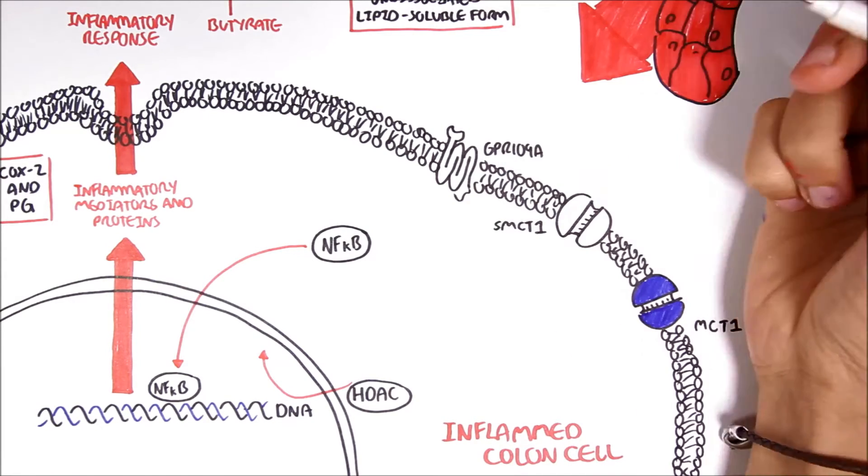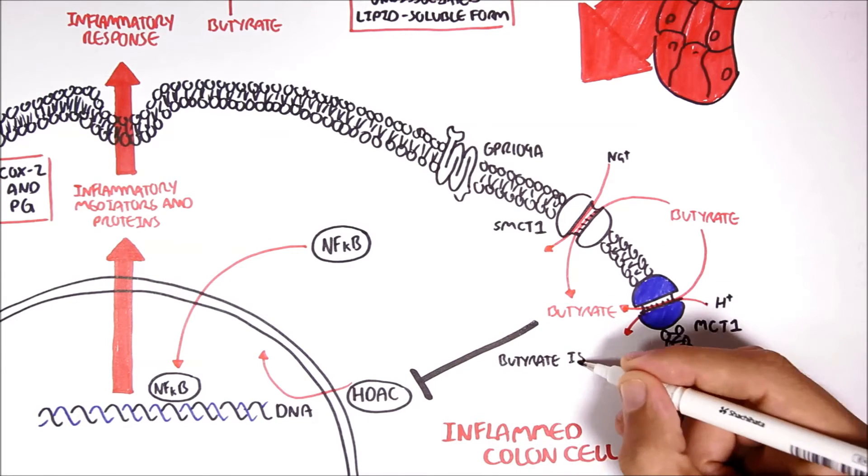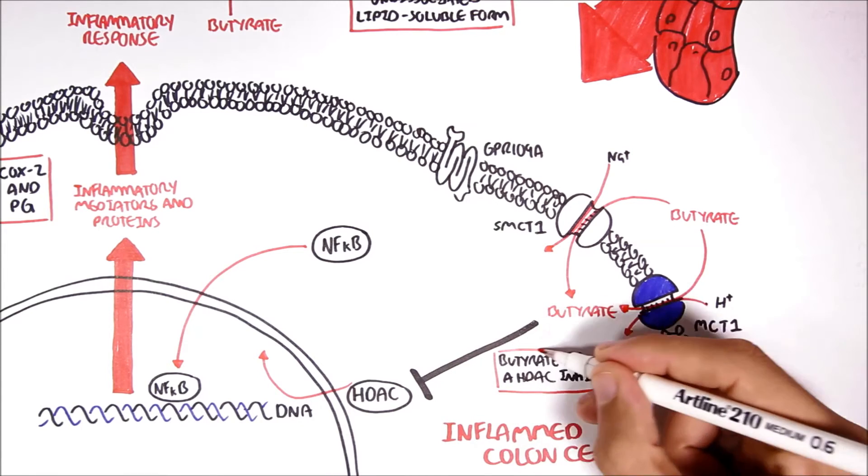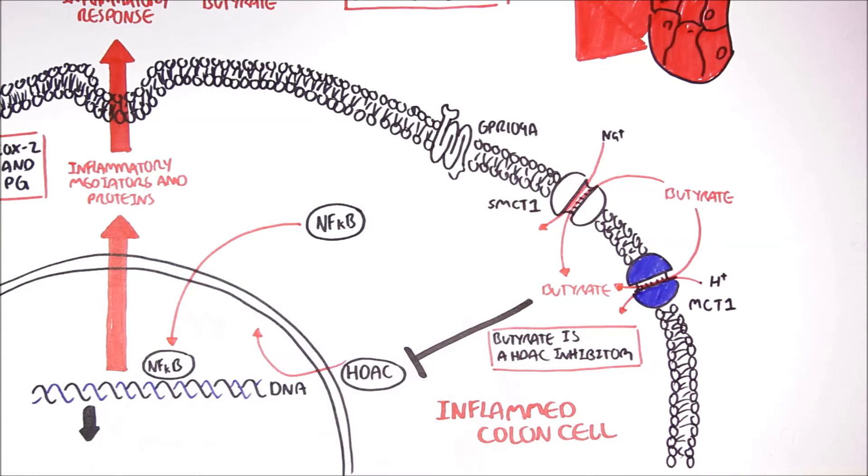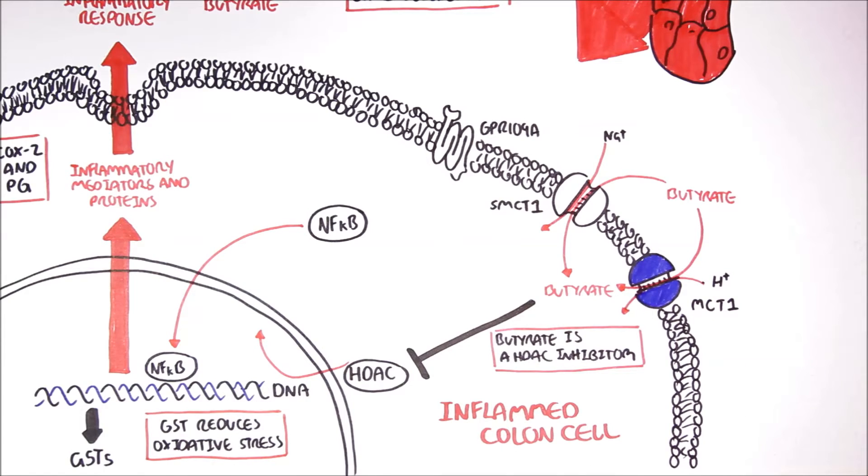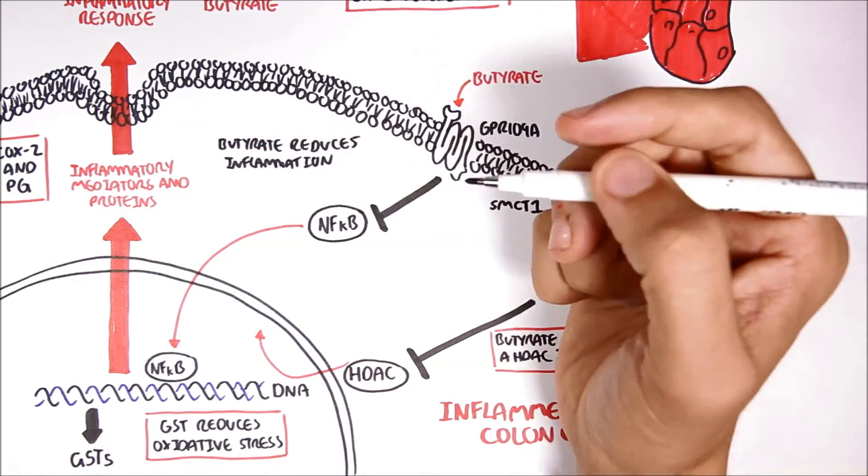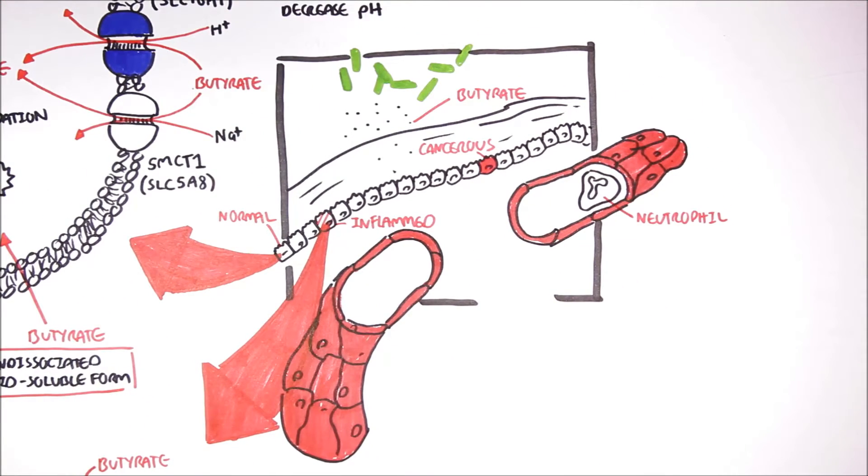Butyrate can enter the inflamed cell through the MCT1 and SMCT1. From here, butyrate can inhibit HDAC, histone deacetylase, because butyrate is a HDAC inhibitor. By inhibiting HDAC, there can be activation of certain genes, such as for glutathione S-transferases, or GSTs. GSTs will reduce oxidative stress associated with inflammation. Butyrate mainly reduces inflammation by inhibiting Nuclear Factor Kappa B through the G-protein receptor 109A, thus inhibiting the production of inflammatory proteins. So that was the effect butyrate have on an inflamed colon cell.